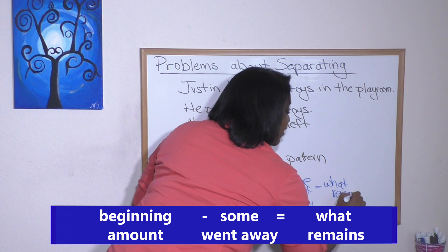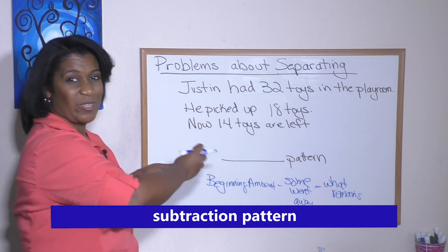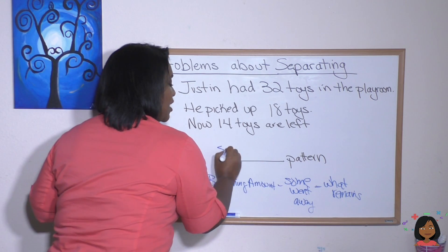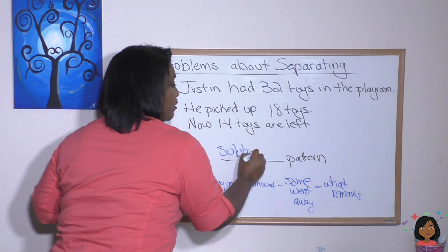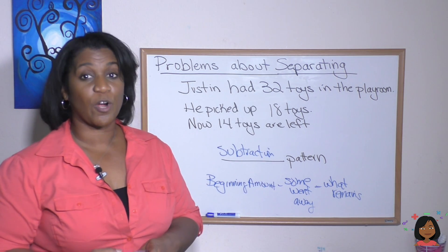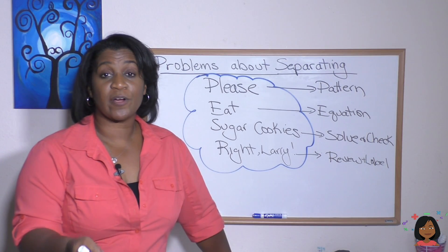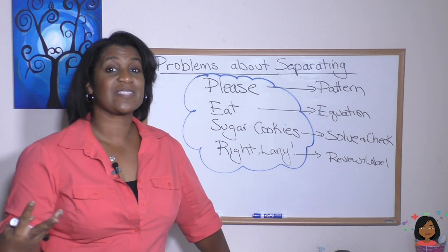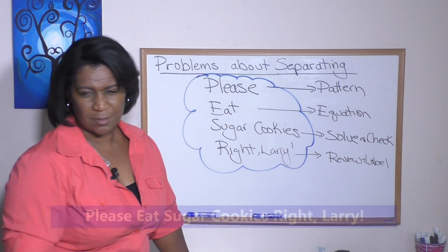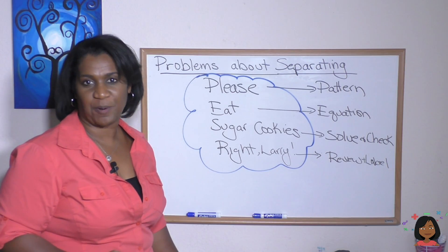We call this a subtraction pattern because we had a certain amount, we subtracted some, and now we have a total. So a subtraction pattern. Let me give you a few examples of how to do word problems with a subtraction pattern. Let's review our device that we use to help us attack word problems: Please Eat Sugar Cookies Right Larry — because he's eating those cookies the wrong way. Let's take a look at our first problem.